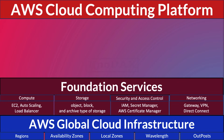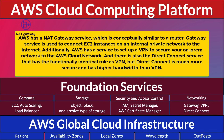Another important category of foundation services is networking. AWS has NAT Gateway service, which is conceptually similar to a router and connects EC2 instances to the internet on an internal private network. Additionally, AWS has Direct Connect service to set up a VPN to secure your on-premises network to the AWS cloud network. Direct Connect has a functionally identical role to VPN but is much more secure and has higher bandwidth.